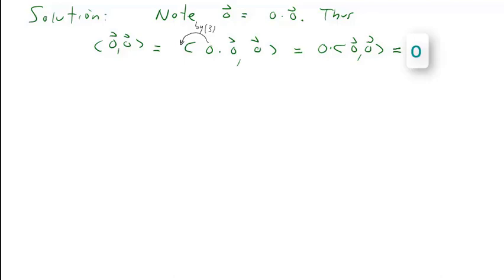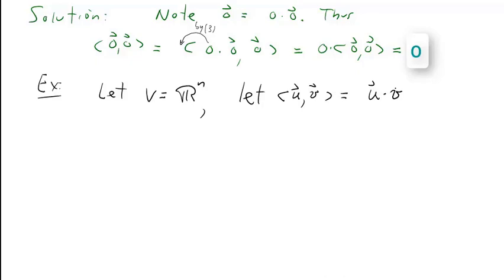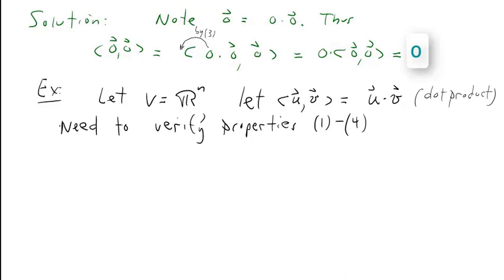Here's an example of an inner product space. Let our vector space be R^n, and let the inner product be defined by the inner product of u and v equals u dot v. In other words, the inner product is just the dot product.